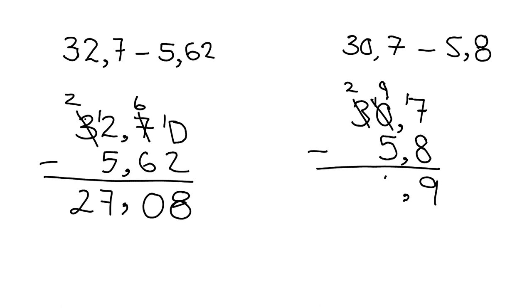Then we look here. We have 9 minus 5, which gives us 4, and we have 2 minus nothing, which gives us 2. So 24.9 is our answer.